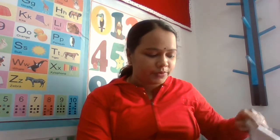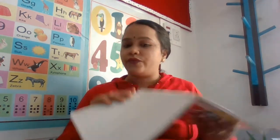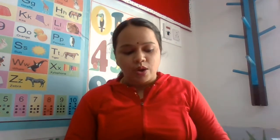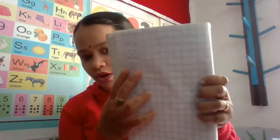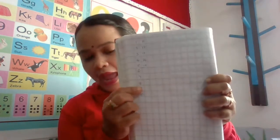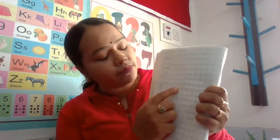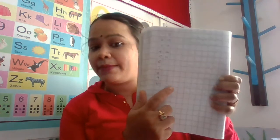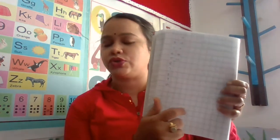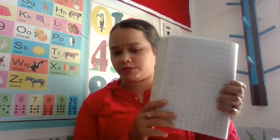You have to write the numbers from 1 to 14 in your box book. Leave one box and write the backward numbers also in your box book. Okay children, thank you so much. Thank you.